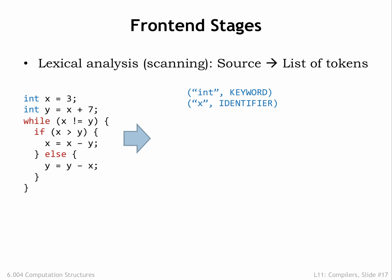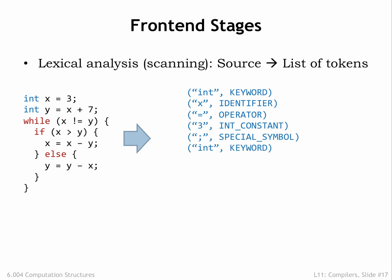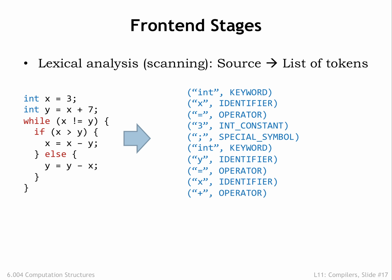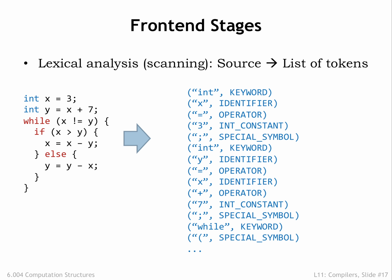The analysis phase starts by scanning the source text and generating a sequence of token objects that identify the type of each piece of the source text. While spaces, tabs, new lines, and so on were needed to separate tokens in the source text, they have all been removed during the scanning process. To enable useful error reporting, token objects also include information about where in the source text each token was found, e.g., the filename, line number, and column number. The scanning phase reports illegal tokens — for example, the token '3x' would cause an error since in C it would not be a legal number or a legal variable name.